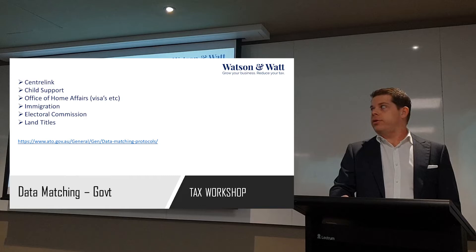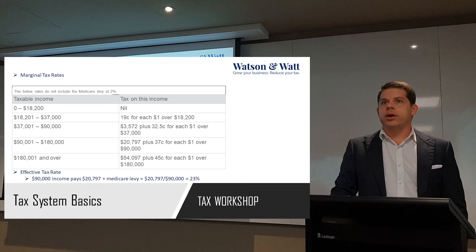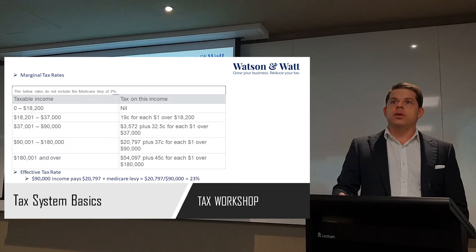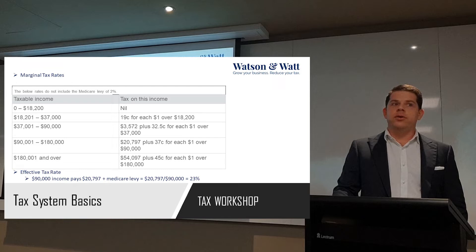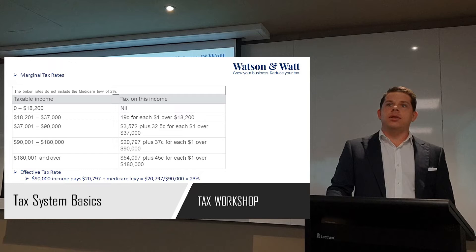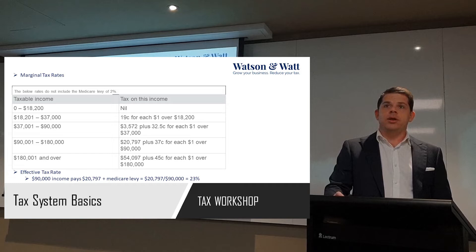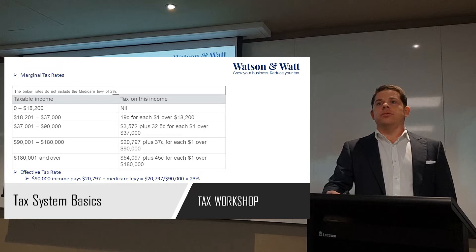Tax system basics - we'll run through this very quickly. We have a marginal tax rate in Australia and they tinker with them all the time. This year the main bracket is 37 to 90,000. I want to point out that the marginal tax rate isn't your effective tax rate. For example, $90,000 of income means you pay $20,797 of income tax, which gives you a tax rate of 23%, but your marginal tax rate is 32.5% excluding the Medicare levy. So every additional dollar you earn, you pay 32.5 cents in tax, but your average tax rate is still only 23%. This becomes important when doing tax planning with companies and trusts, because we can plan around the actual average tax rate for the group as a whole.